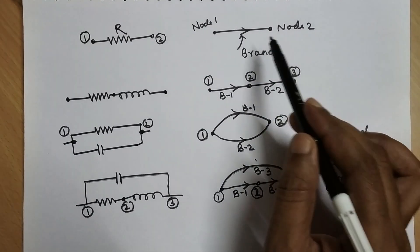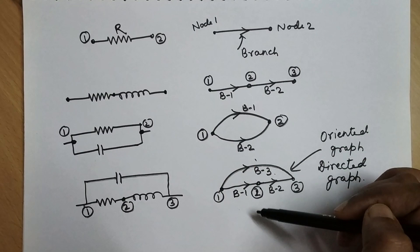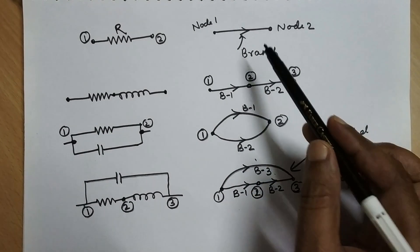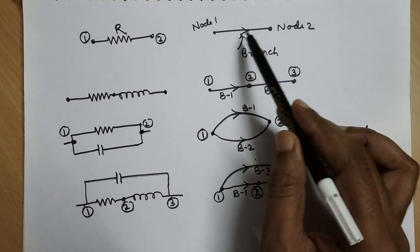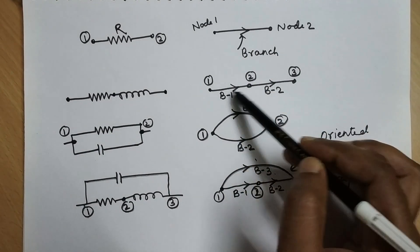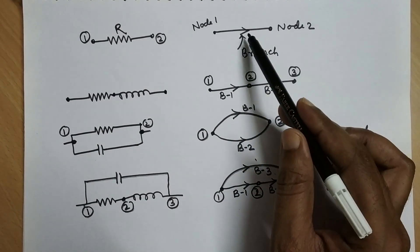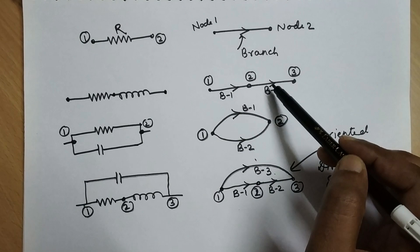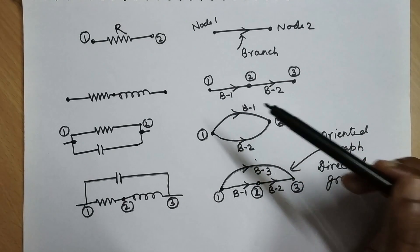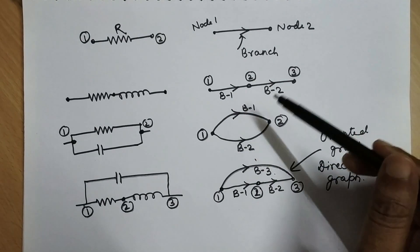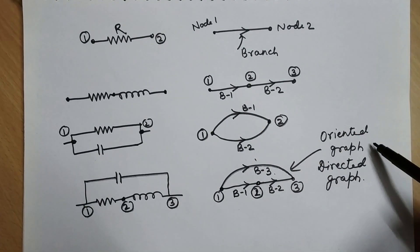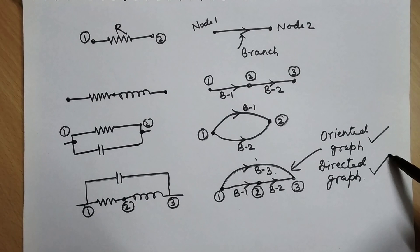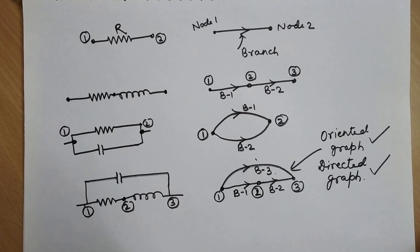In these four graphs, we can see that in all the elements a direction of current has been assigned. So this graph is called an oriented graph, also known as a directed graph. Thank you.